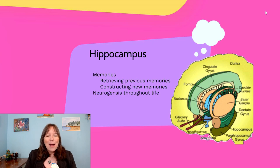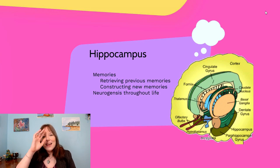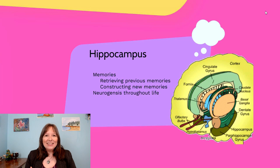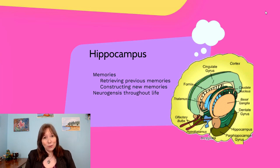The amygdala's proximity to the hippocampus is key. The hippocampus is where we produce and retrieve our memories. It's a part of the brain that's constantly growing new neurons, and damage to the hippocampus tends to create problems either retrieving existing memories or creating and storing new ones.